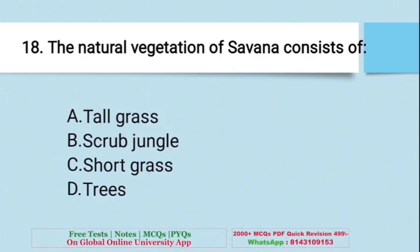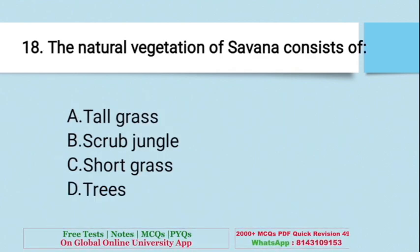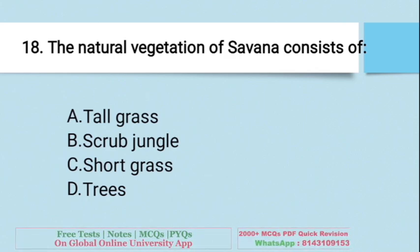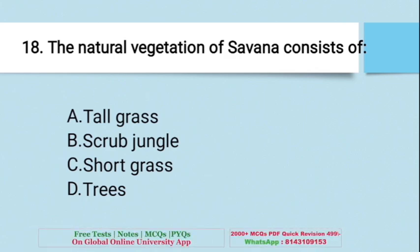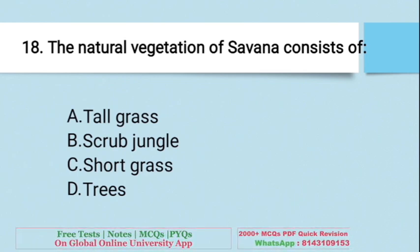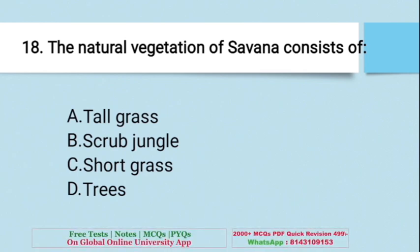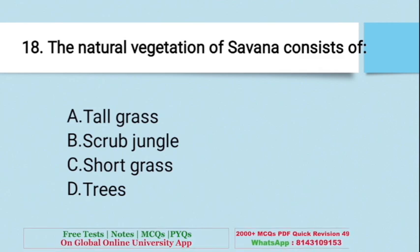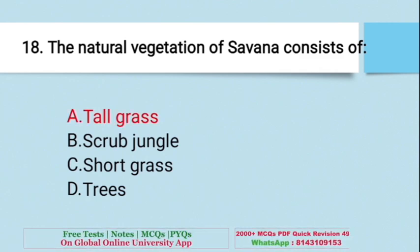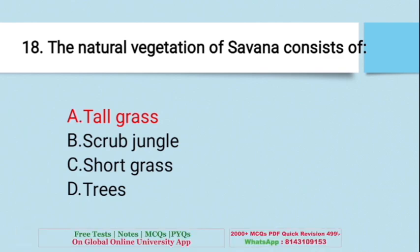Question: The natural vegetation of savanna consists of — A. Tall grass, B. Scrub jungle, C. Short grass, D. Trees. The right answer is A — tall grass. Long, tall grass is a characteristic of the savanna.